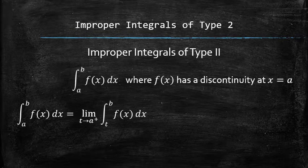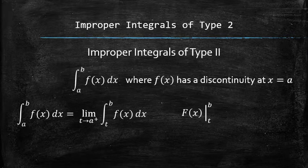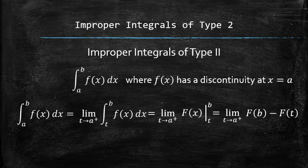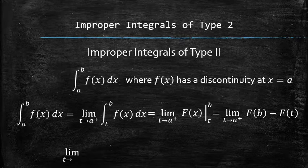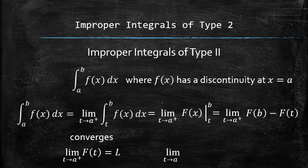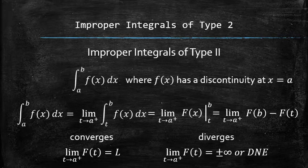Now that we don't have to worry about the discontinuity in the lower limit, we can find the general antiderivative and apply the fundamental theorem of calculus, and only then focus on finding the limit of the resulting function in terms of the new variable t. If the limit is finite, then we say that the original integral converges. Otherwise, if the limit is infinite or doesn't exist, we say that the original integral diverges.